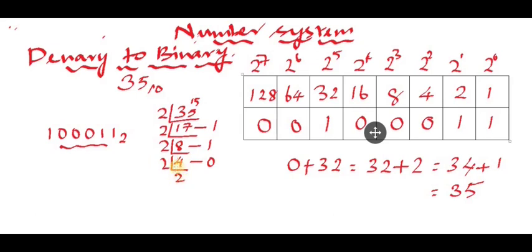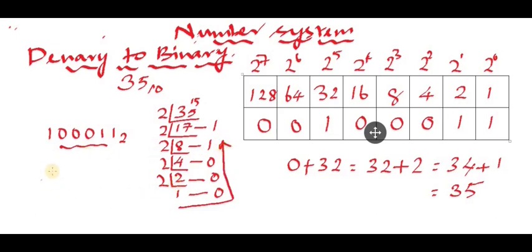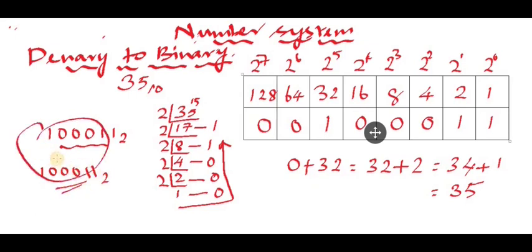Continuing: 2 divided by 2 — remainder 0; 1 divided by 2 — remainder 1. Reading remainders from bottom to top, the answer is 100011 base 2. Both methods give the same final answer. Thank you.